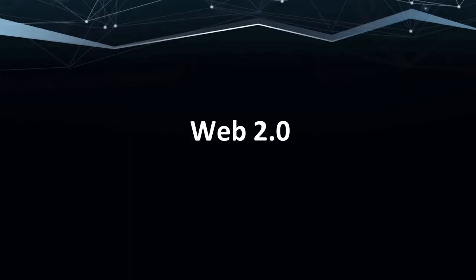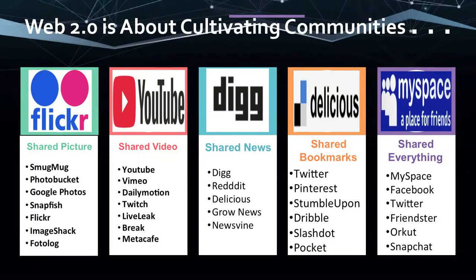Web 2.0 technologies already in extensive use by librarians are all about cultivating communities. Flickr is a community of shared pictures where people upload, share, and comment. YouTube is where people create communities and share video content. Digg is shared news where news is tagged and distributed. Delicious is an example of shared bookmarks, with bookmarks also shared on sites like StumbleUpon, Drupal, Slashdot, Pocket, Twitter, and Pinterest — sharing various kinds of interests and bookmarks.